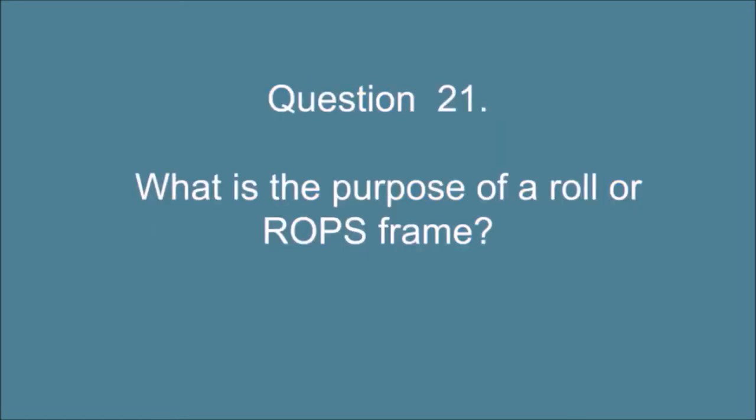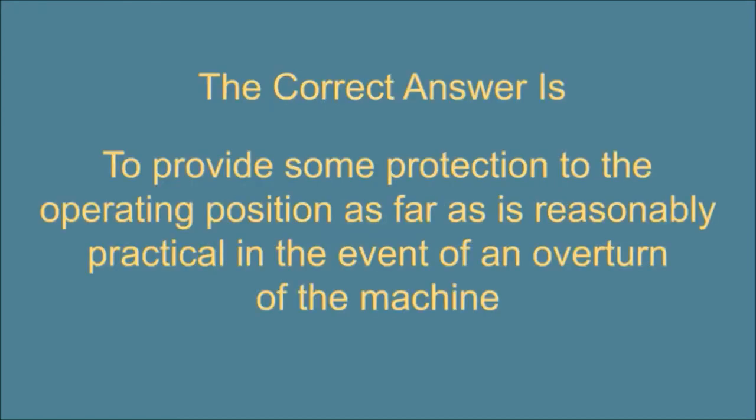Question 21. What is the purpose of a roll or ROPS frame? The correct answer is, to provide some protection to the operating position, as far as is reasonably practical, in the event of an overturn of the machine.